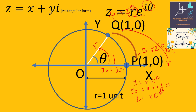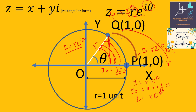When z = r rotates by an angle theta, we obtain another complex number z = r·e^(iθ). So r = 1 has rotated by angle theta to give the complex number z = r·e^(iθ). Now let's see how we can project this point Q onto the x-axis and y-axis, because any complex number z can be written in terms of its components.